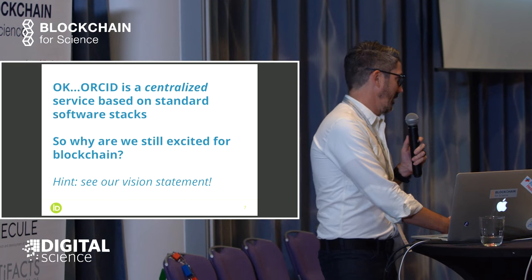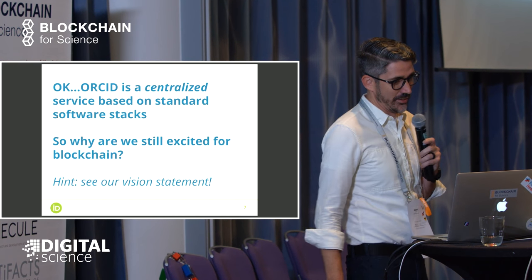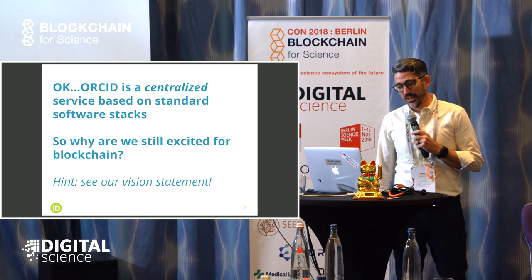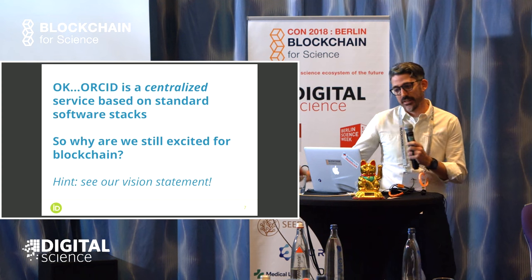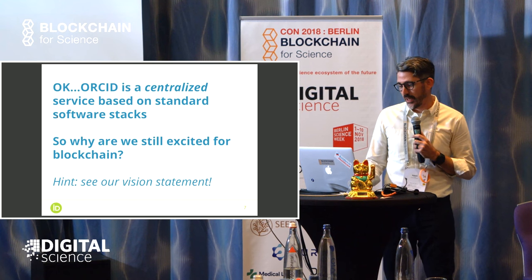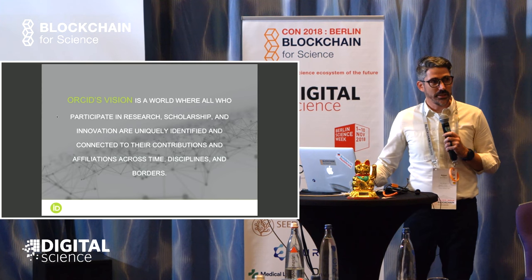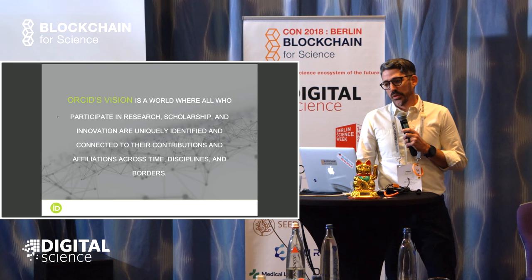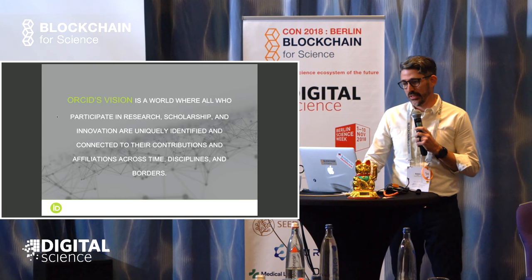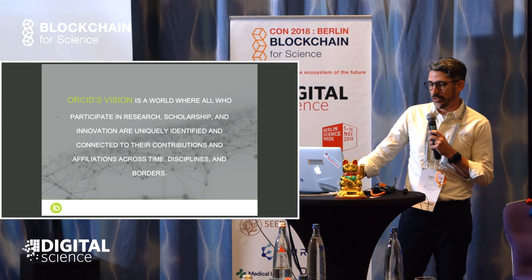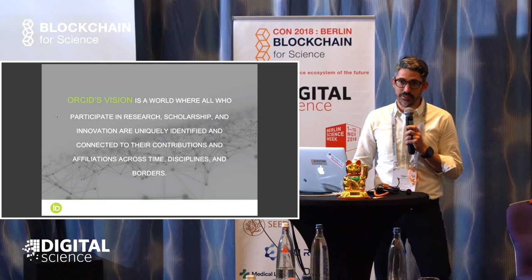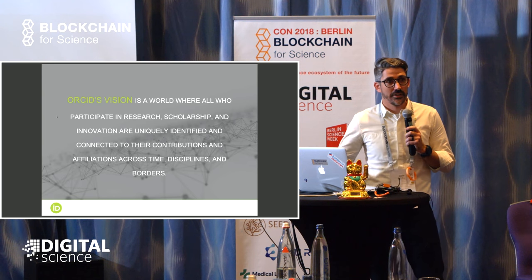We heard talk earlier about, hey, we just do a lot of this stuff in a centralized manner, and that's great. ORCID is one example of that working. But we are actually really excited for blockchain. If you want to understand why, you've got to read our vision statement. ORCID's vision is a world where all who participate in research, scholarship, and innovation are uniquely identified and connected to their contributions and affiliations across time, disciplines, and borders. Our mission is not that ORCID is the entirety of everything — our mission is to make sure researchers are connected to their outputs.